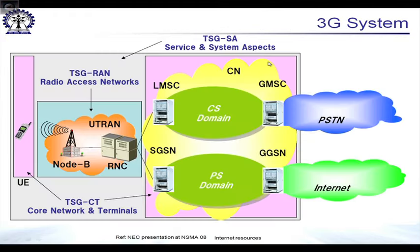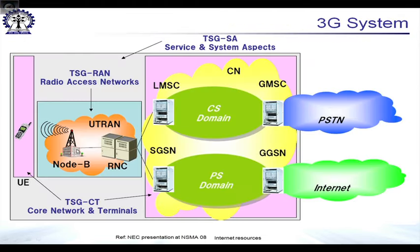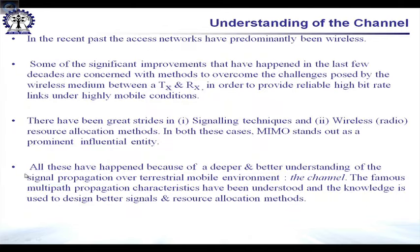This is a typical picture of a 3G system, showing the radio network controller, the UTRAN, and clearly the radio access network, which contains several eNodeBs or base stations and several user equipments.